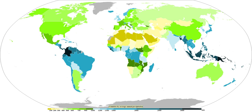Extratropical cyclones can bring cold and dangerous conditions with heavy rain and snow, with winds exceeding 119 km/h — sometimes referred to as windstorms in Europe. The band of precipitation associated with their warm front is often extensive, forced by weak upward vertical motion of air over the frontal boundary, producing precipitation within a wide, elongated, stratiform band falling out of nimbostratus clouds. When moist air tries to dislodge an Arctic air mass, overrunning snow can result within the poleward side of the elongated precipitation band.